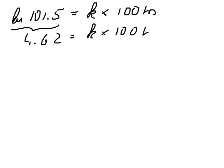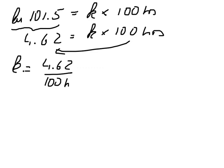Now we just bring that to the other side and we get k, our growth constant, equals 4.62 divided by 100 hours. That gives us 0.0462 and the unit would be 1 over hours.